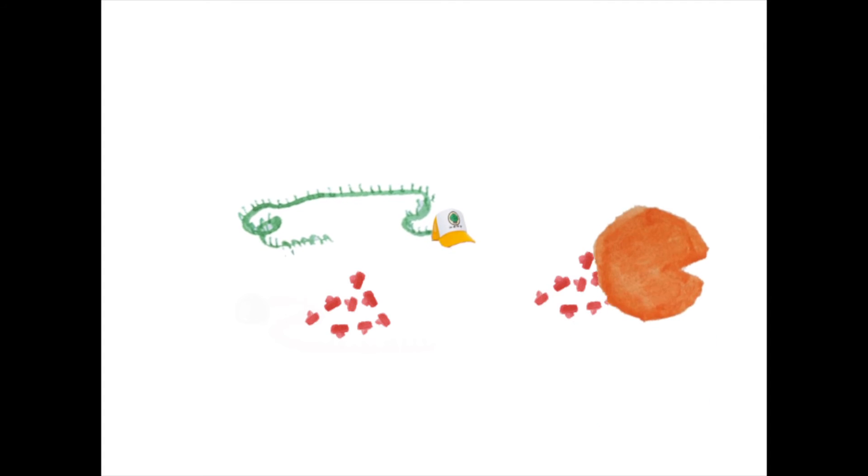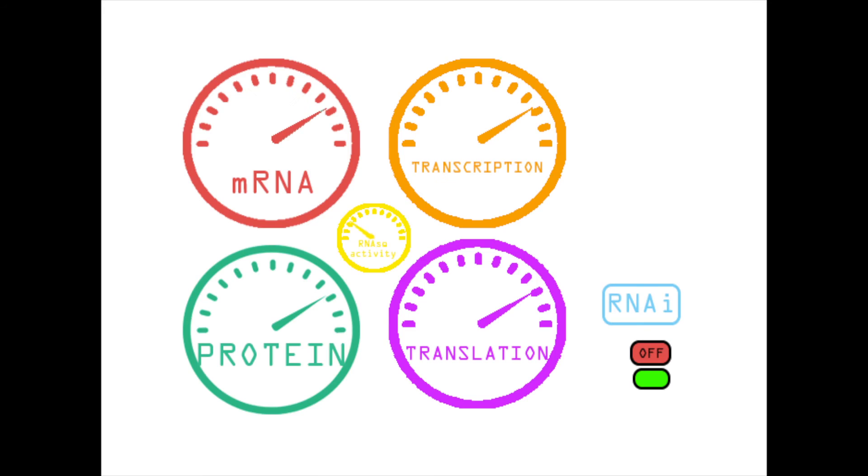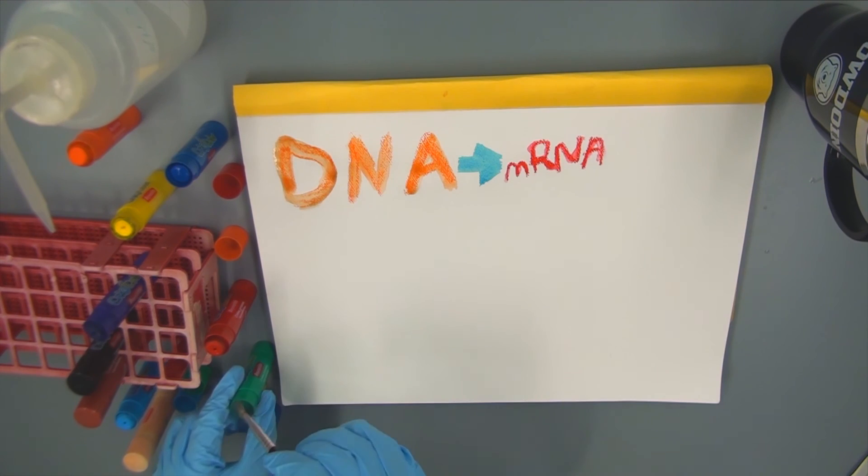The process of RNA interference therefore allows the deletion of target mRNA. mRNA would usually go on to be translated into a protein and act on the system. However, when RNA interference occurs, because mRNA is cut and broken down before it is translated, the protein cannot be expressed.